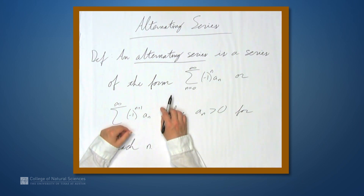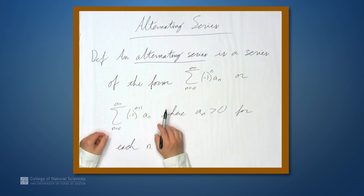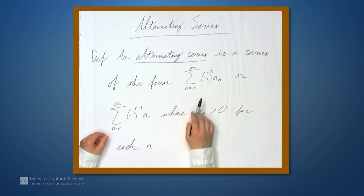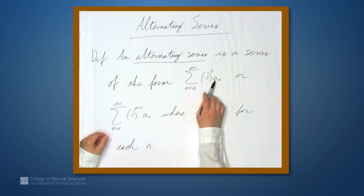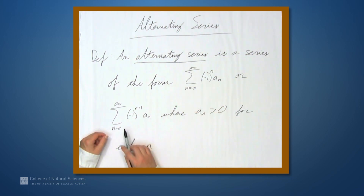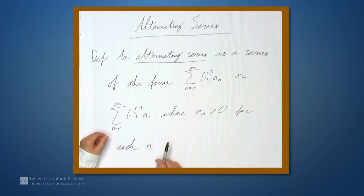We're here at the example table, and in this video we're going to be talking about alternating series. An alternating series is a series of the form: sum from n equals 0 to infinity of negative 1 to the n times a sub n, or negative 1 to the n plus 1 times a sub n, where a sub n is greater than 0 for each n.